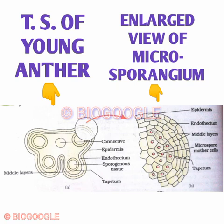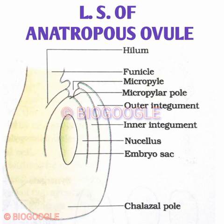For the TS of young anther, you should draw the transverse section showing the four wall layers. Second is the enlarged view of a microsporangium — show all four wall layers with all labelings. Next is the LS of anatropous ovule — show all parts including embryo sac, nucellus, integuments, funicle, micropyle, etc.